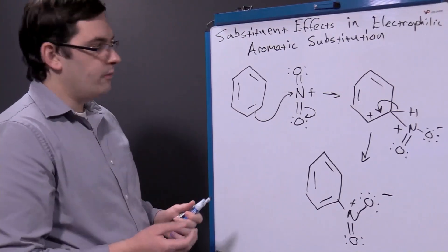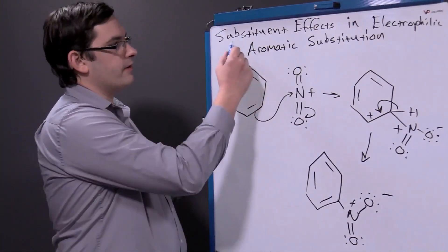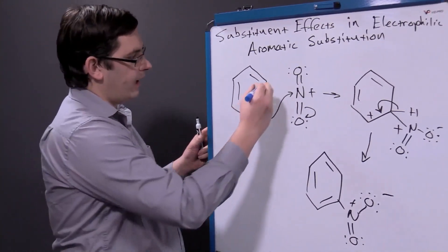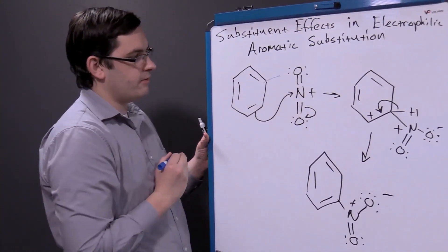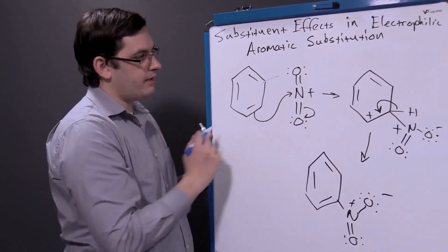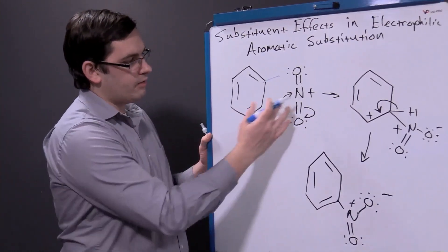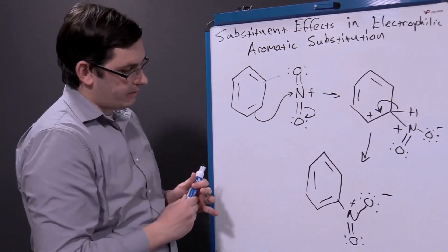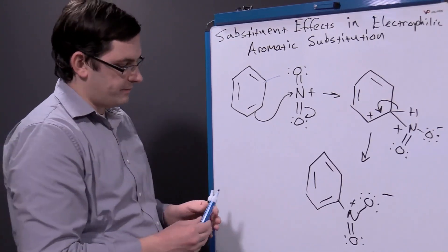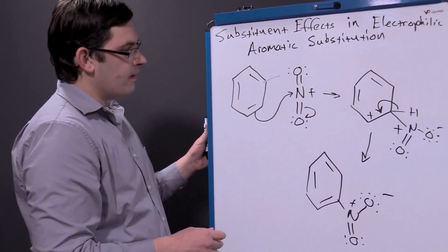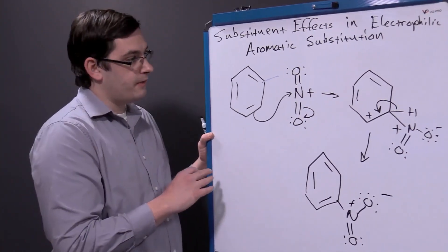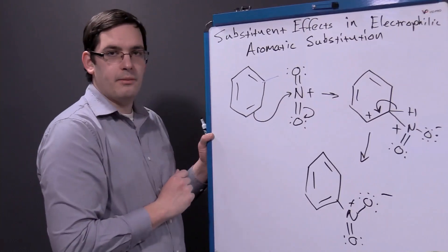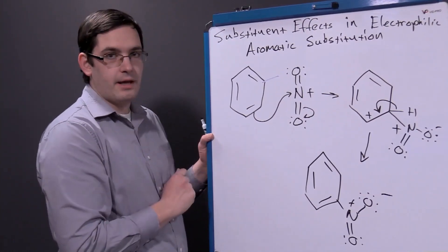In this video we'll look at how other substituents will affect this reaction. So if we add a group onto our ring, it's going to affect our reaction with that nitronium ion as we create our nitro-substituted ring system. One of the important things we've learned is that this first step is the most important or rate-limiting step in our reaction.